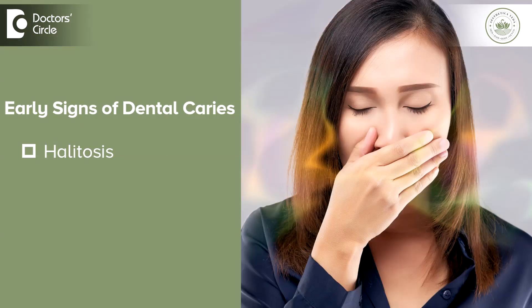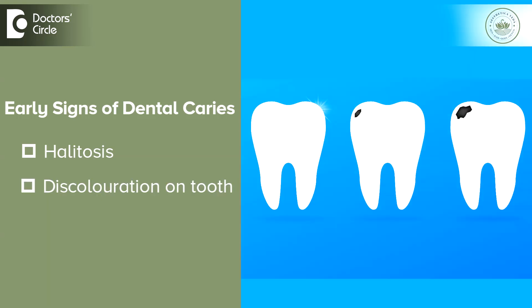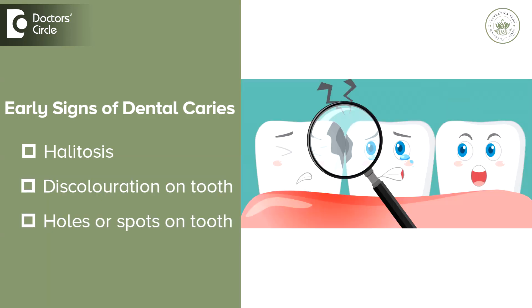There are a few early signs that can help in detection of dental caries so that it doesn't progress further. These are halitosis, which is bad breath, any signs of discoloration that you can observe on your tooth, and any holes or spots that you find on your tooth where you feel that food is getting lodged.